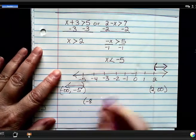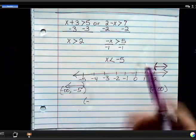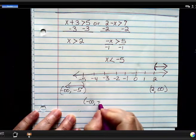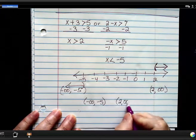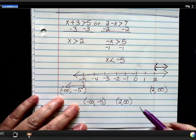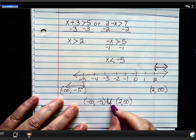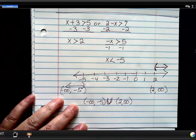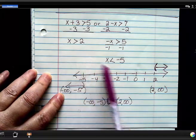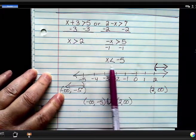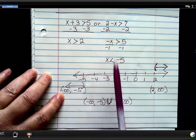I have negative infinity to negative 5. And then I also have 2 to positive infinity. And then I need to use my symbol, which is a U. So that's what a union of two equations that don't have anything in common look like.